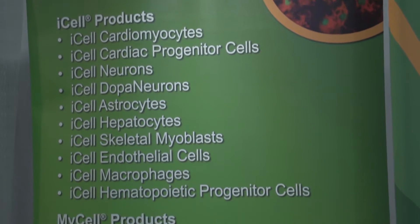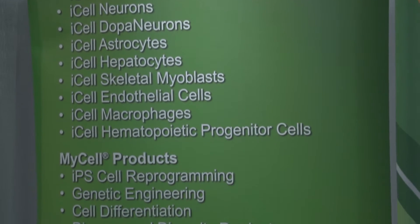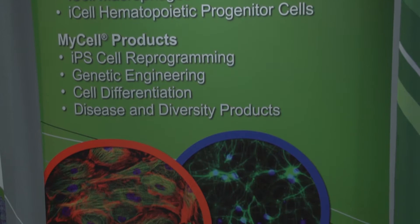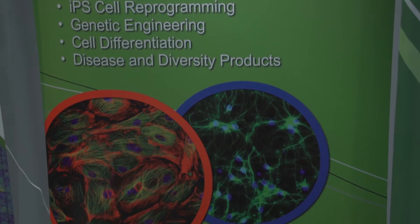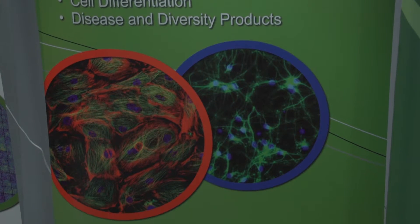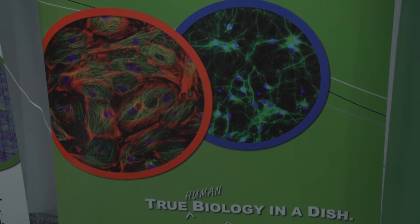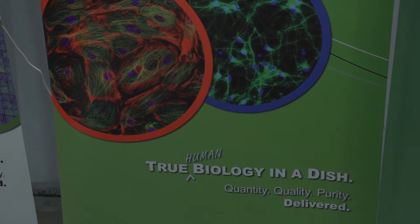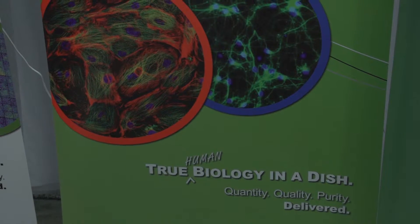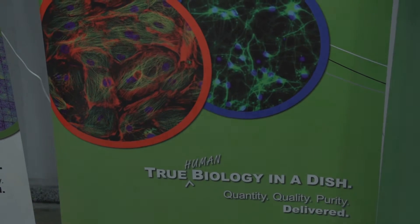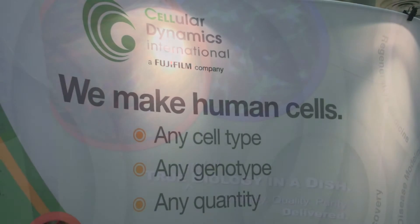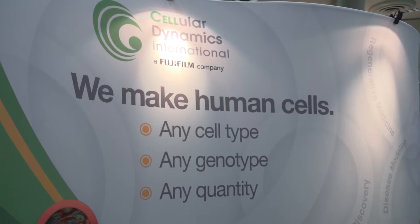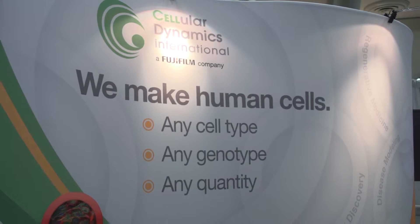Now, however, we've introduced two new product concepts. One is our MyCell product, which is really the ability to take blood from any donor, turn it into an IPS cell, and then produce and scale any of the cell types that I just described that can be found in our catalog.